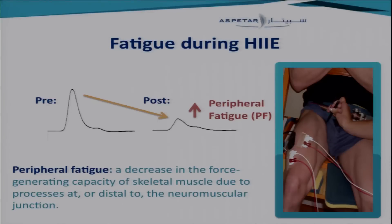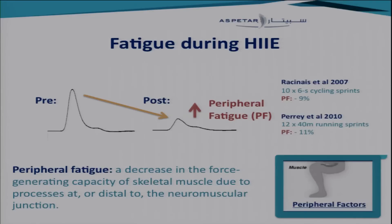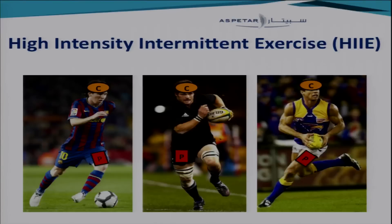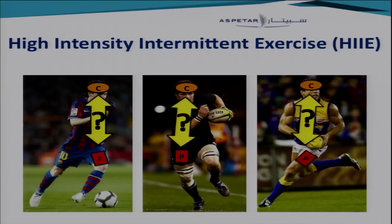For peripheral fatigue, we evoke the same twitch but just at rest, which isolates any influence upstream of the central nervous system and gives us an index of peripheral fatigue. Under sea level conditions, a 9% and 11% reduction in peripheral fatigue has been reported during cycling and running sprints. We know both central and peripheral fatigue occur during high intensity intermittent exercise, however the interplay between these mechanisms is not well understood.